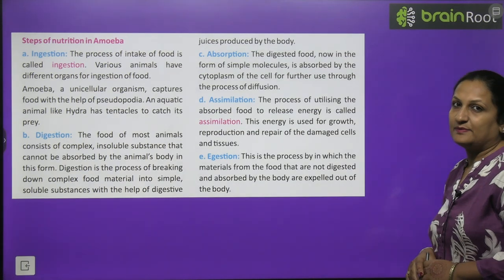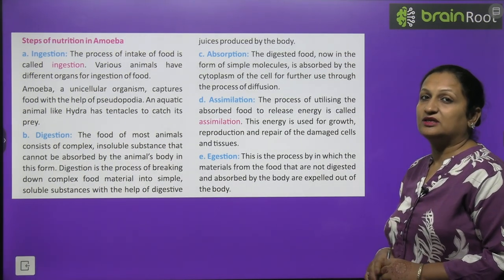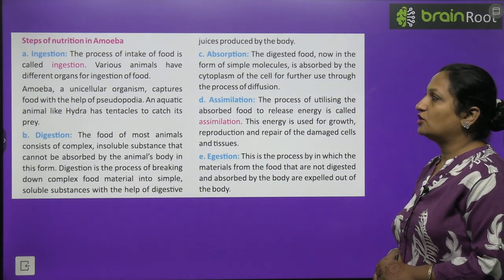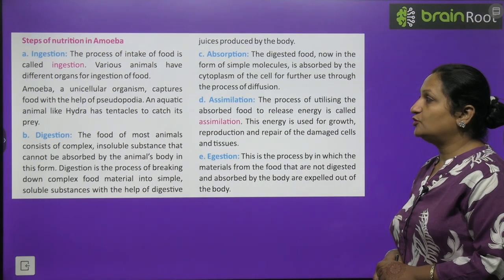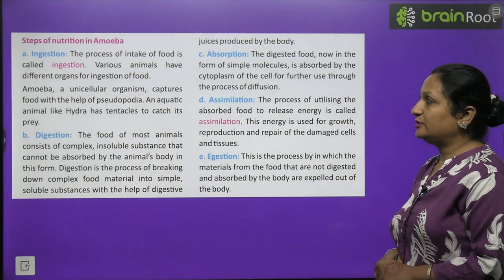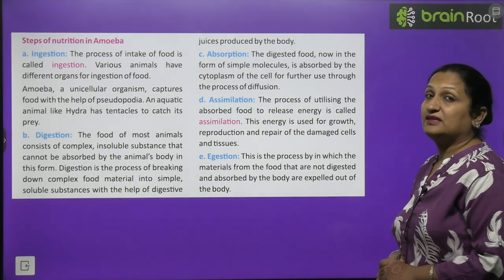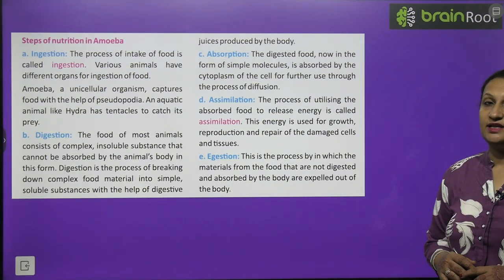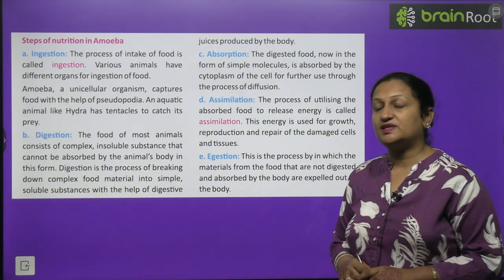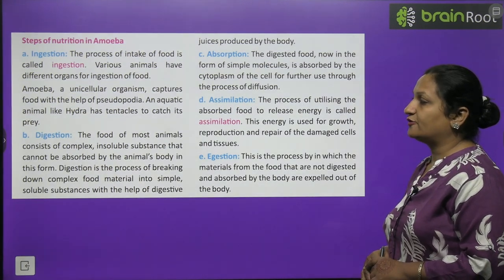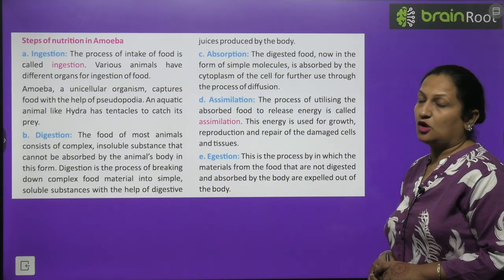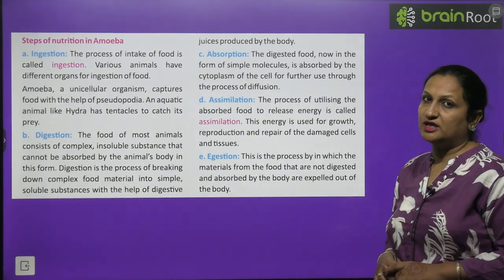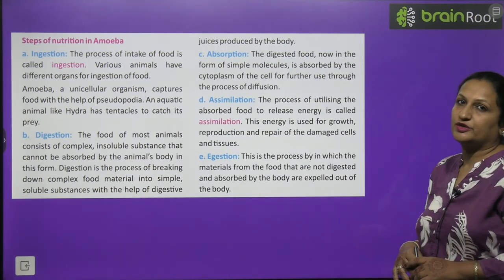The steps of nutrition in amoeba: First is ingestion — the process of intake of food is called ingestion. Various animals have different organs of ingestion; amoeba captures food with the help of pseudopodia, while an aquatic animal like hydra has tentacles to catch its prey. Next is digestion — the food of most animals consists of complex insoluble substances that cannot be absorbed as such. Digestion is the process of breaking down complex food material into simpler soluble substances with the help of digestive juices produced by the body.